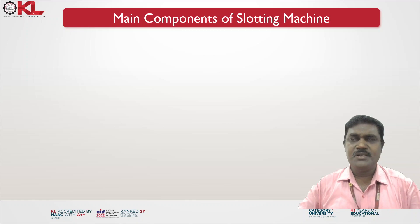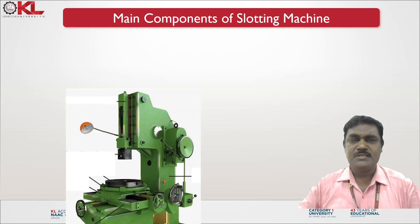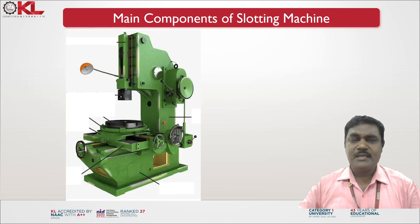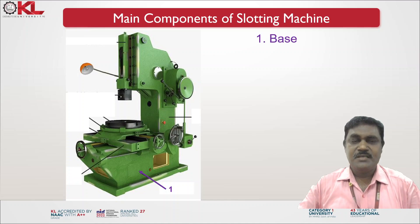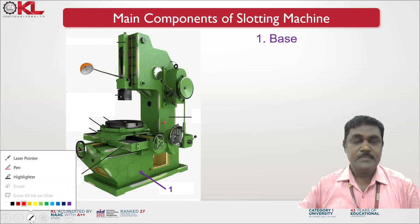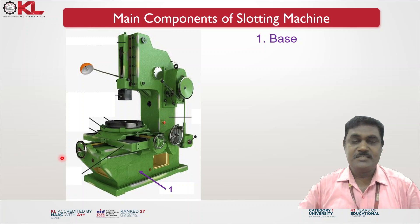What are the main components of a slotting machine? Now look at this diagram of the slotting machine. We will see what the main components are. The first one is the base — let me use the laser pointer for easy understanding. This is the base portion.